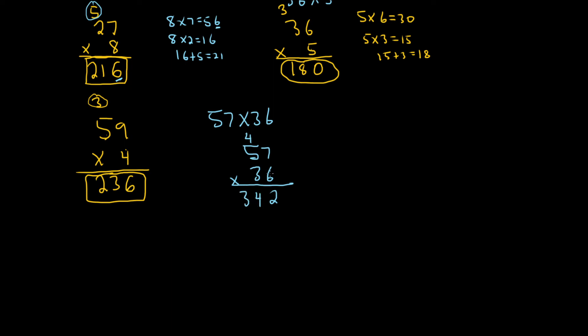Again, 6 times 7 is 42. We wrote down the 2, we carried the 4. 6 times 5 is 30. 30 plus 4 is 34.